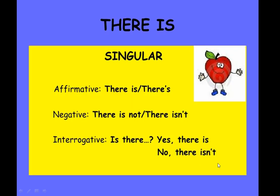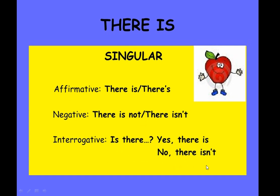Let's study this in detail. 'There is' is used in the singular — whether the sentence is affirmative, negative, or interrogative. The forms are: there is, there is not, is there, yes there is, no there isn't.